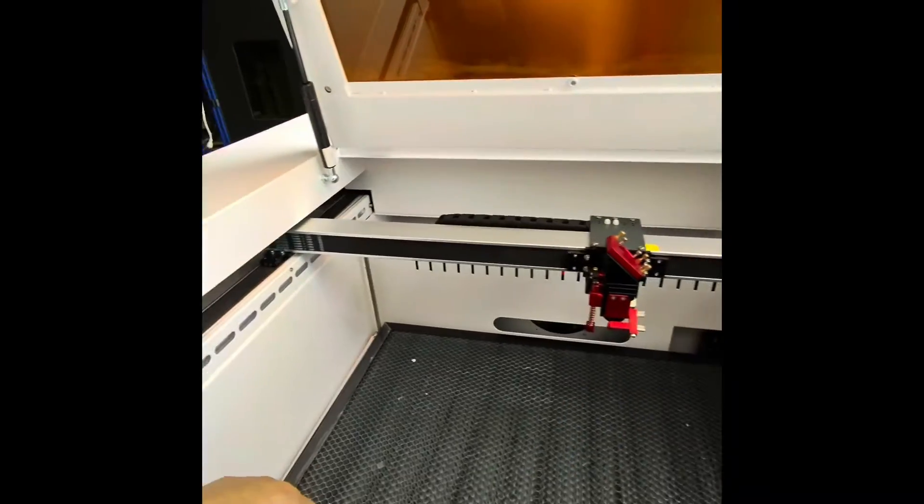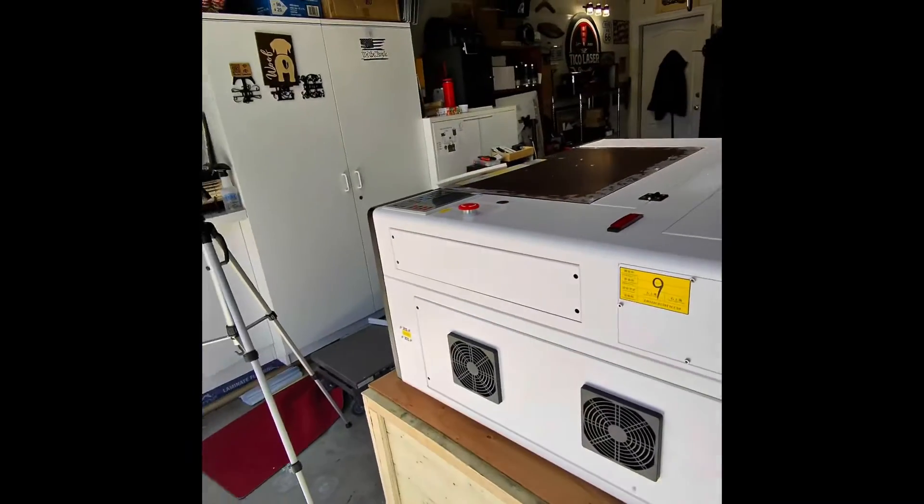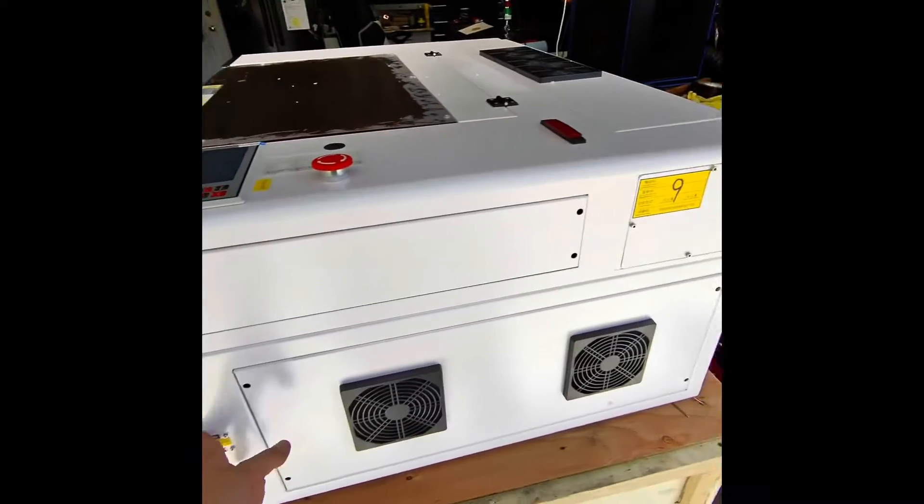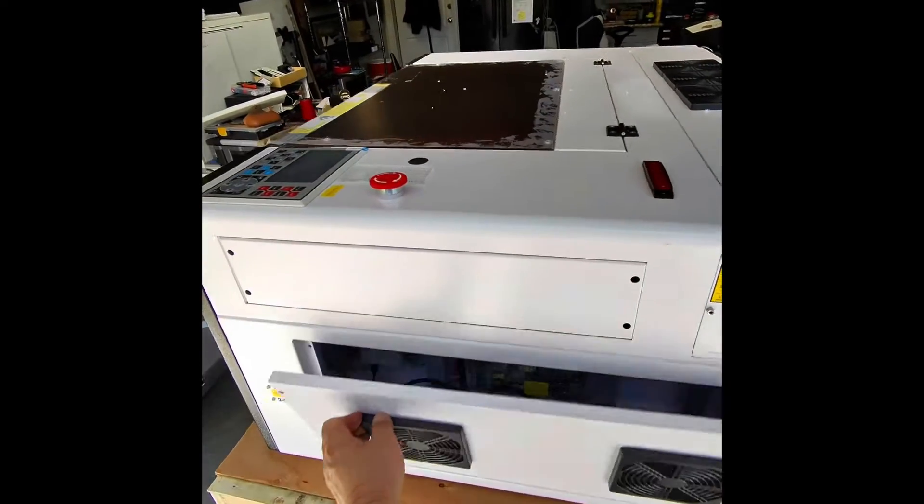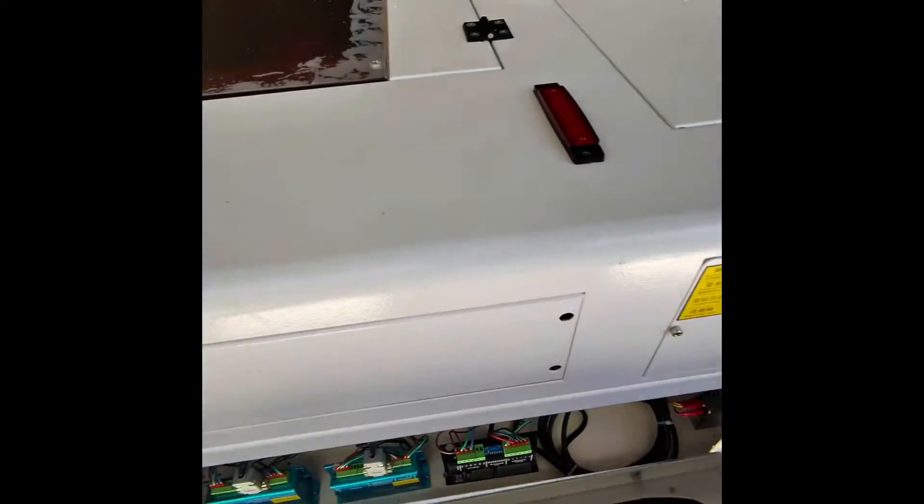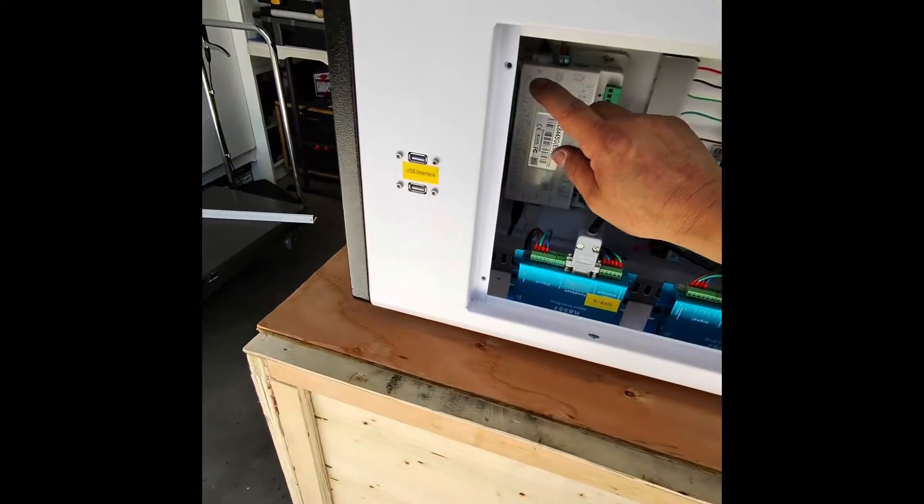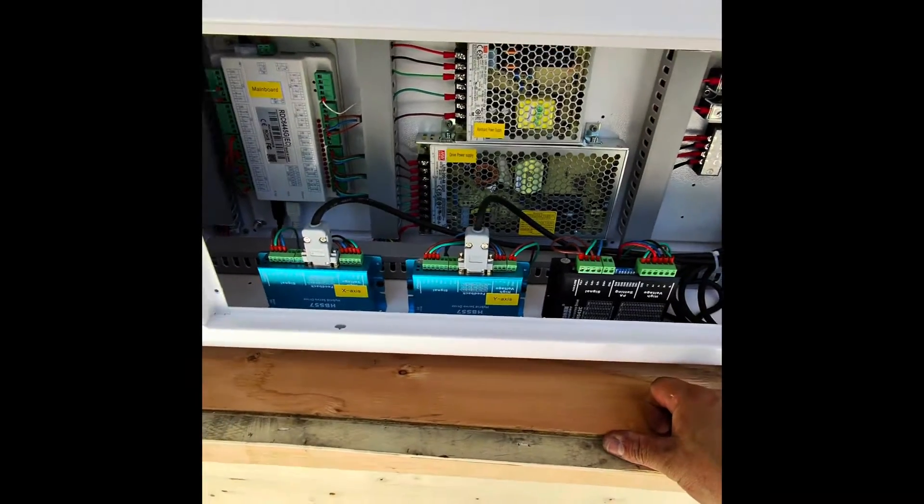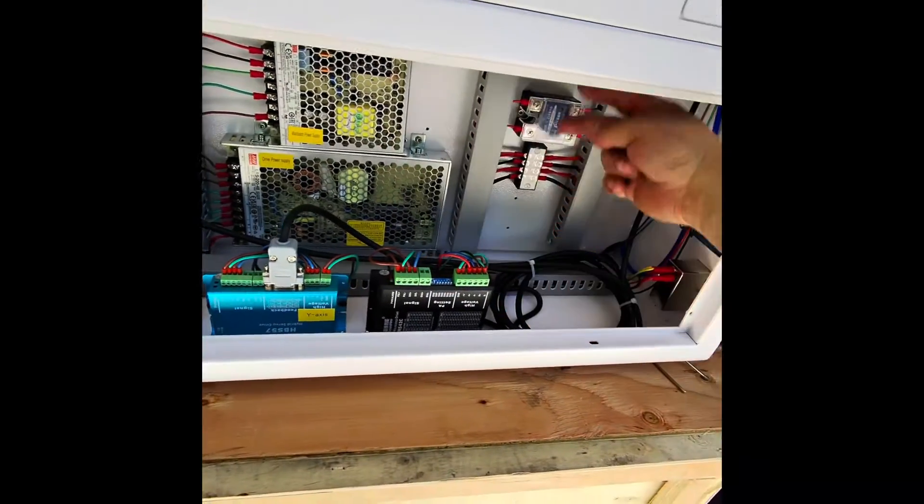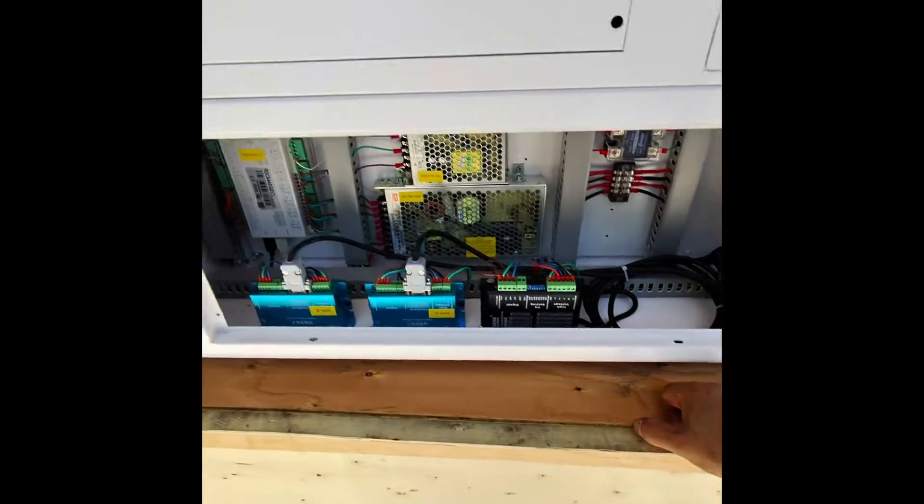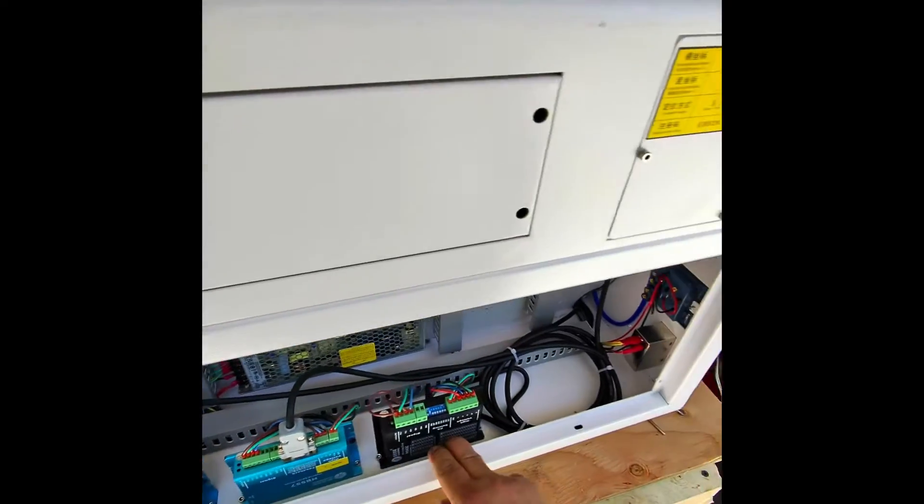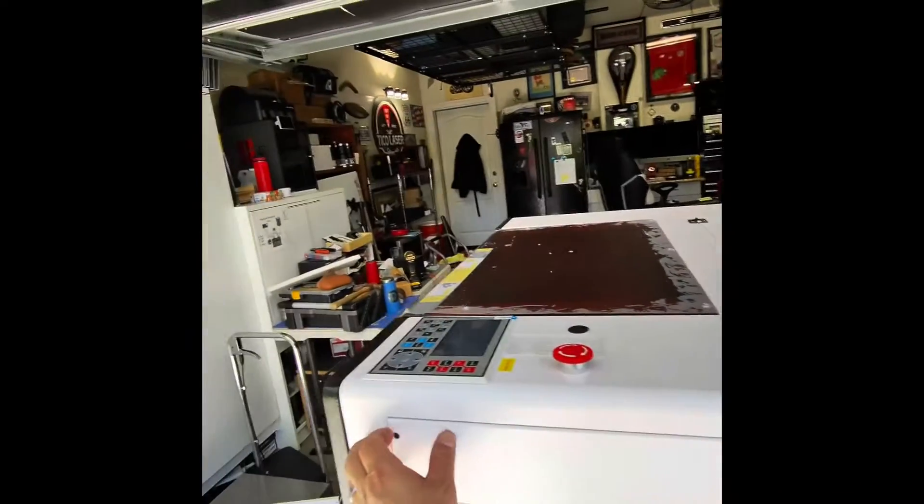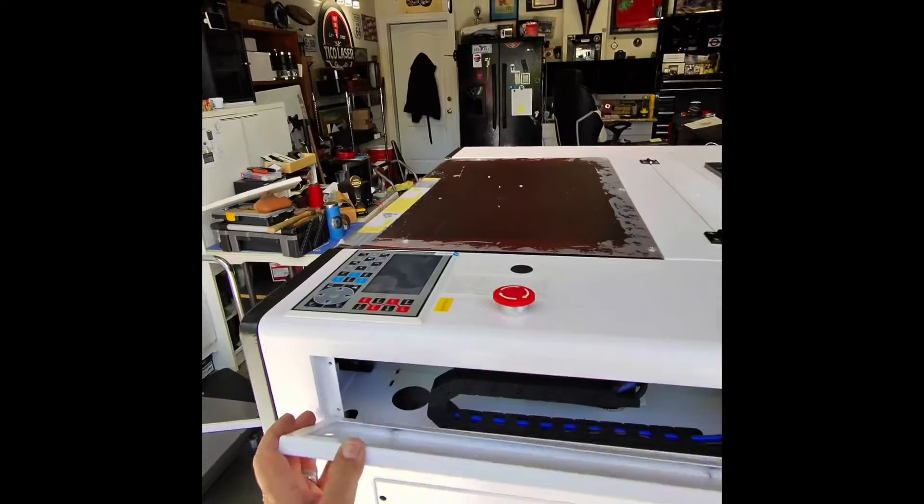Alright, just a quick walkthrough. So on this side we have the USB interface just to plug in your USB. This over here will be the side that has your main board, your drive power supply, the main board power supply, a couple of relays and stuff like that, also your motor drivers. So that's all we have on this side.